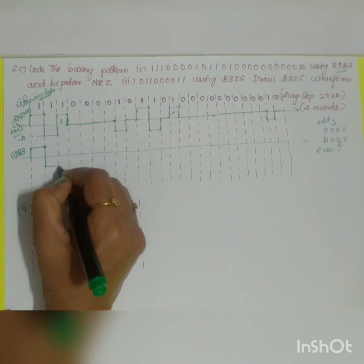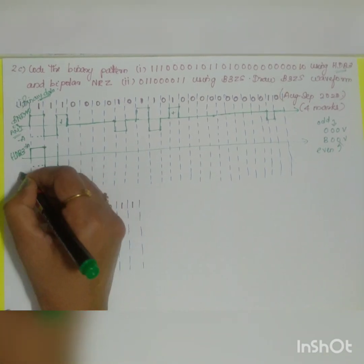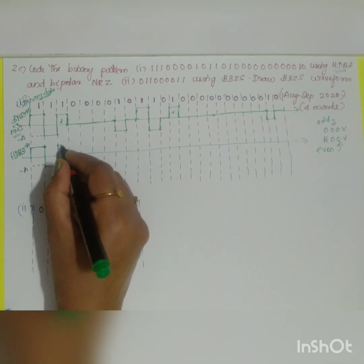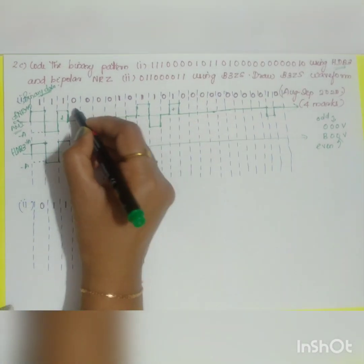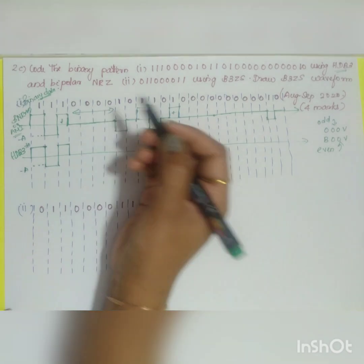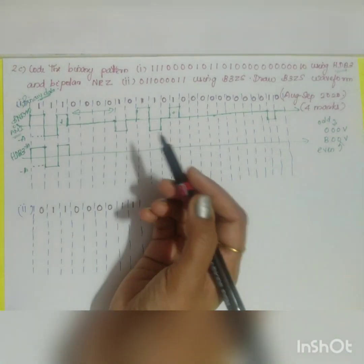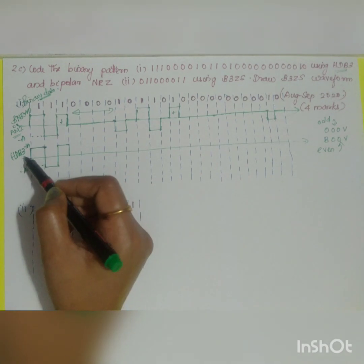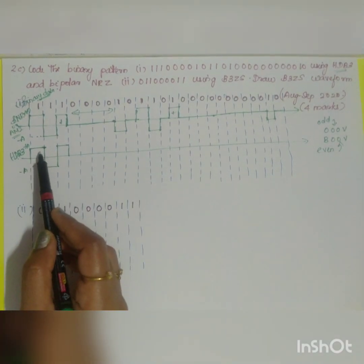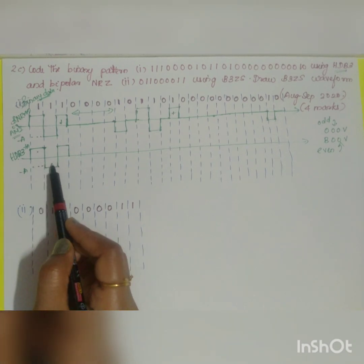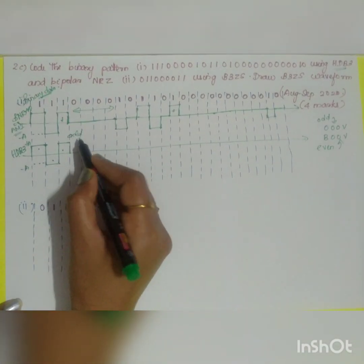The first bit is positive, the second is minus A, and the third one will be positive. Next you have four consecutive zeros, so you have to replace them using HDB3. Assuming a violation happened before this, count the number of ones since the last violation: one, two, three — that is three ones, so you have an odd number of ones.